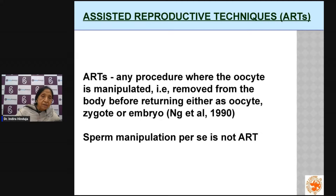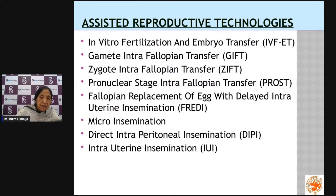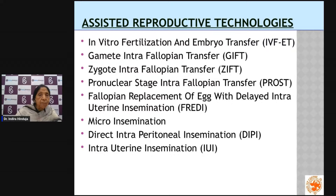Various procedures come under assisted reproduction. The most important is in vitro fertilization and embryo transfer. In vitro fertilization means fertilization outside the body — the embryo that develops after the egg and sperm meet is called an embryo, and it is then returned back into the uterus.